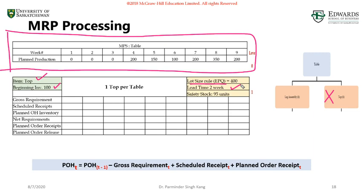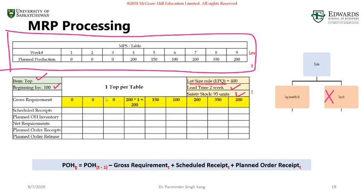The safety stock you need to keep is 95 units, so please keep that constraint in mind. The gross requirements follow a similar process — no production for weeks one, two, and three, so gross requirements are zero. However, we need one table top to make one table, so as we plan to make 200 tables, we need 200 table tops, then 100 tops in week six, and so on. There are no scheduled receipts.